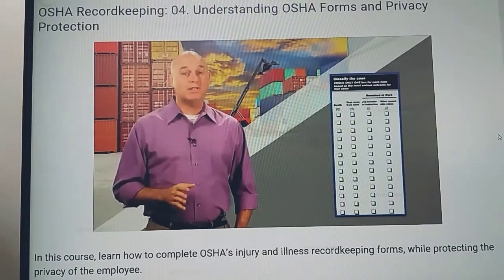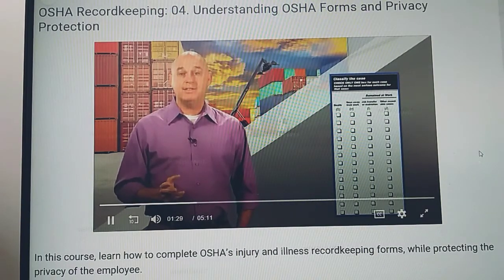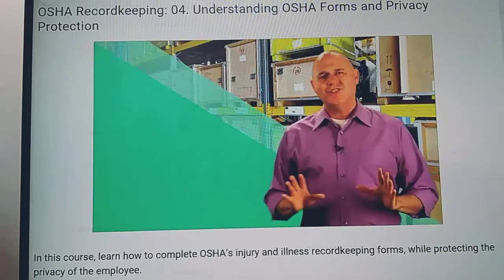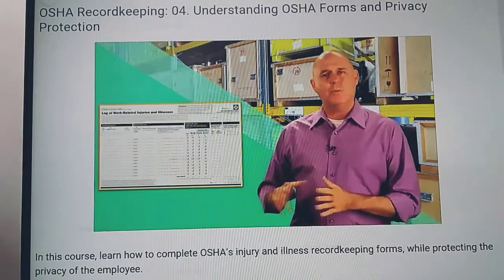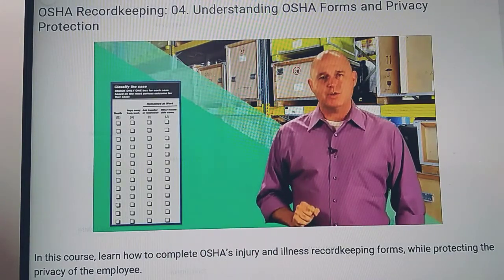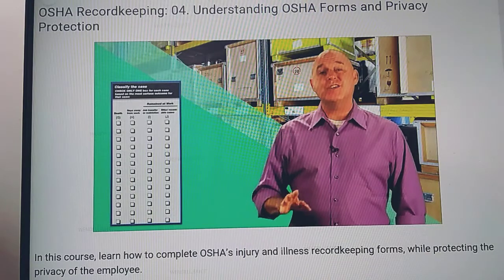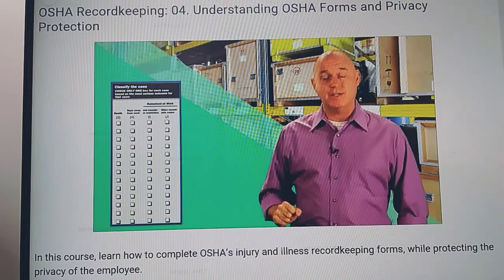Form 300 has four checkboxes that are used for classification purposes: death, days away from work, job transfer or restriction, and other recordable cases. It's essential to know that when completing Form 300, you can check only one of these four options. So if more than one apply, always check the most severe classification for that particular incident.